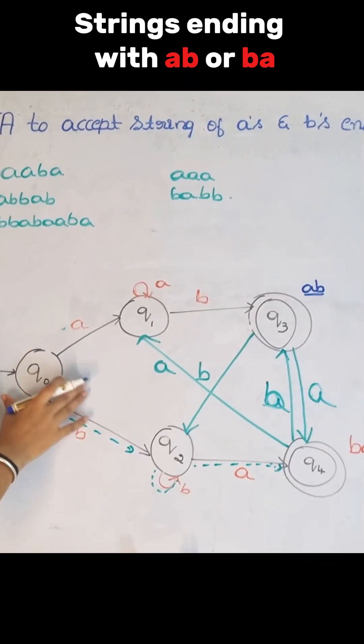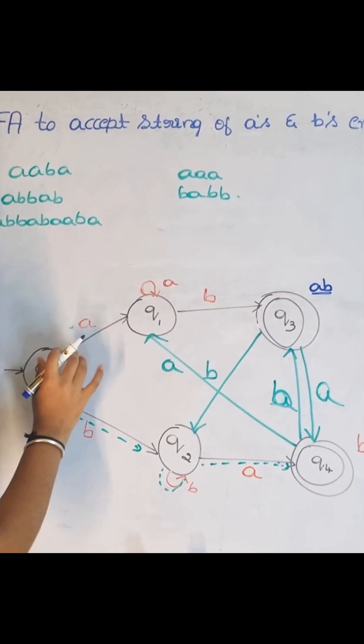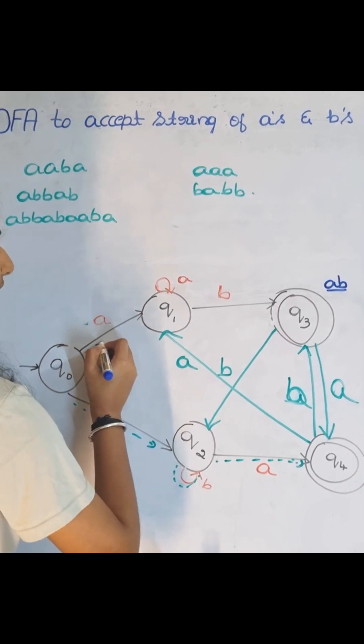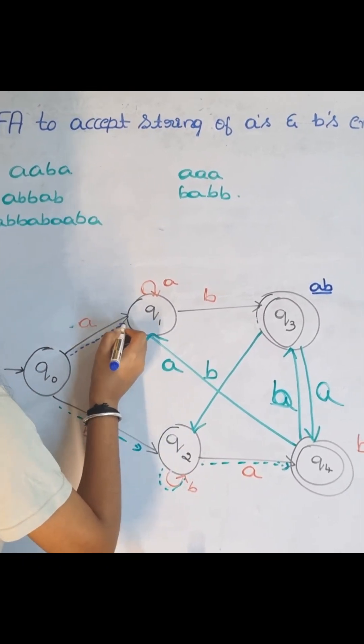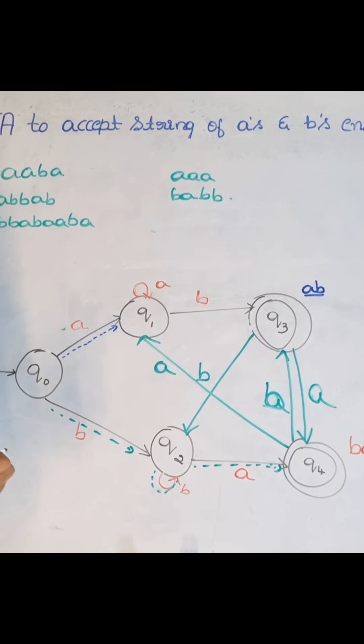In Q0 state, if I get A, I should move to this state. So I get A, I am moving to Q1 state and then again A.